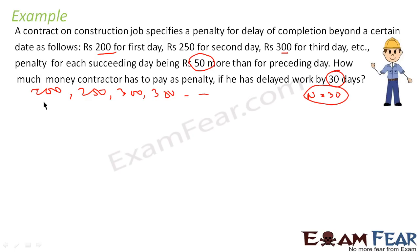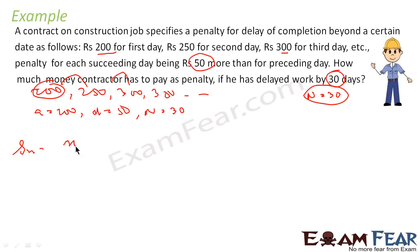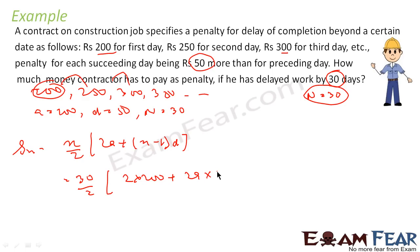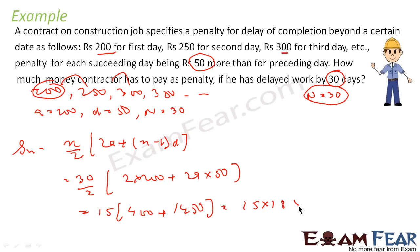Here A = 200, D = 50, and N = 30. Using the formula S_n = N/2 × (2A + (N−1)D), we get S_30 = 30/2 × (2×200 + 29×50), which is 15 × (400 + 1450), giving 15 × 1850 = 27,750.